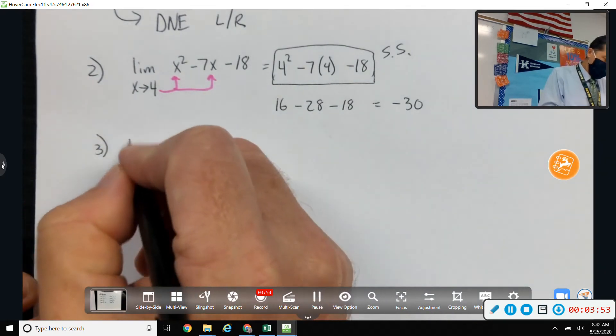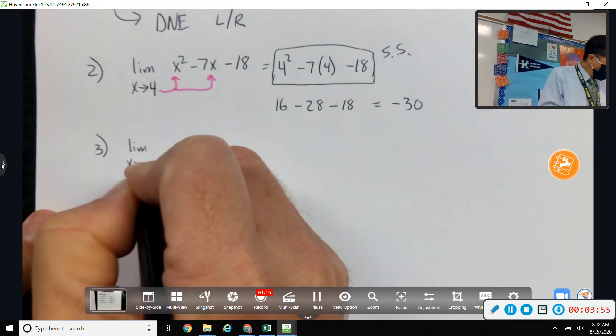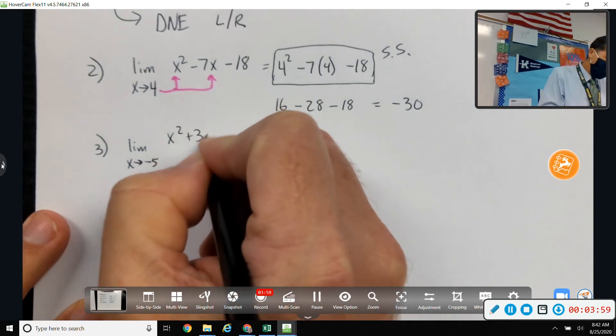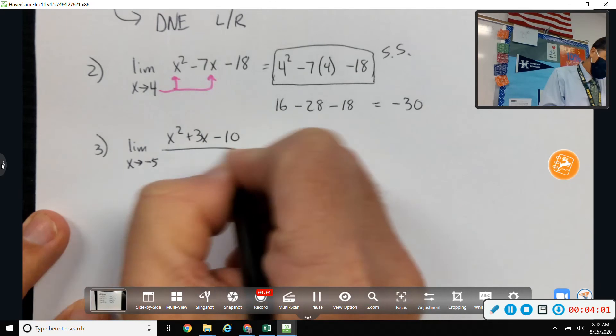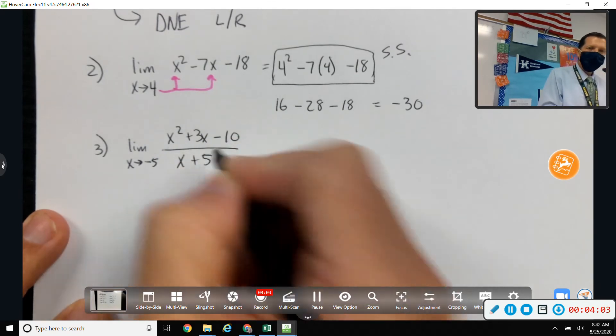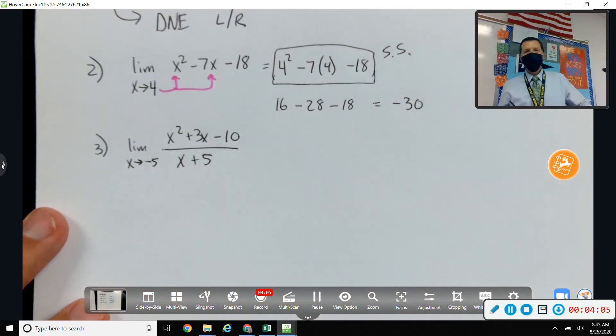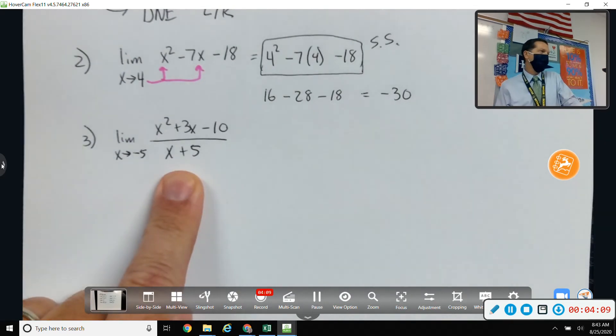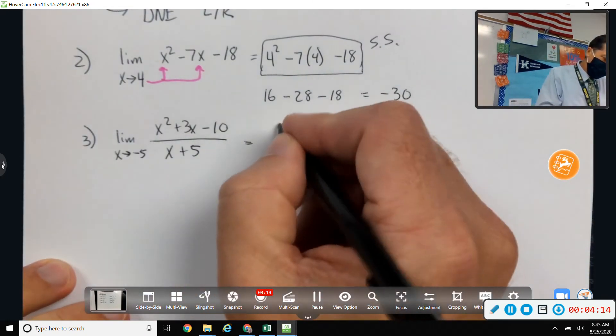Number 3. Limit as x approaches negative 5. x squared plus 3x minus 10 over x plus 5. Well, try direct substitution, but you see right away it's not going to work. You're going to get 0 in the bottom. So, let's factor the top.